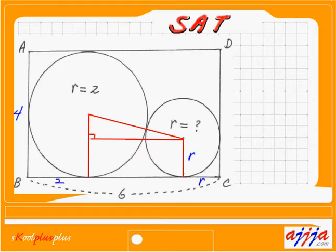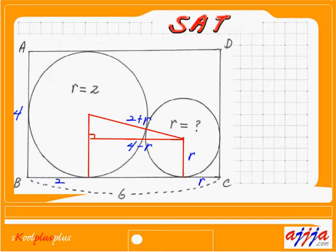I can label this one R, and this one also R. This one is 2. Now what about this segment right here? That means 6 minus 2 minus R, which is 4 minus R. So the base of this right triangle is 4 minus R.